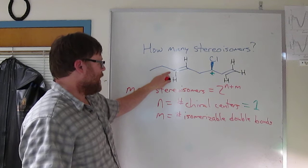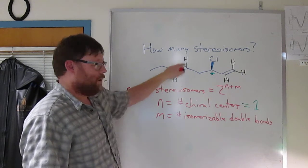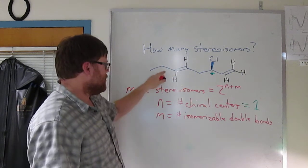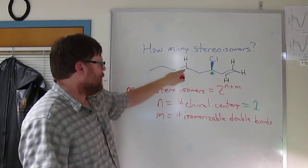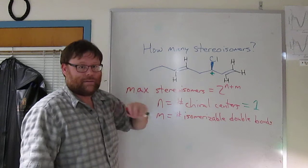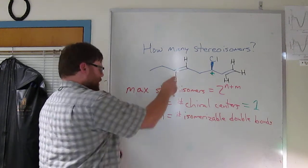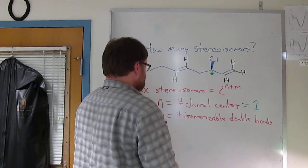An isomerizable double bond is going to have two different groups on both carbons. Okay, so on this carbon, there's an ethyl and an H. Those are different. On this carbon, there's an H and this organic chain. Those are different. So this is an isomerizable double bond. We'll put a star next to that.